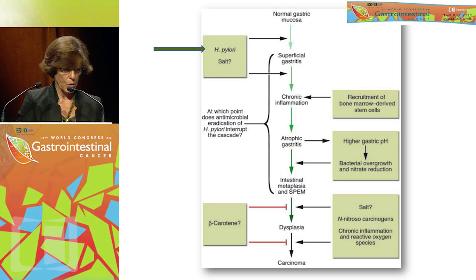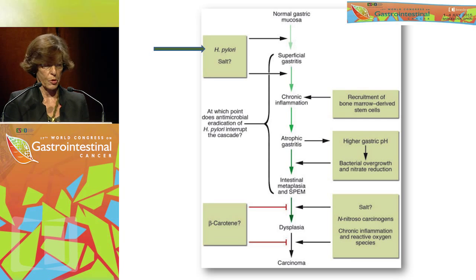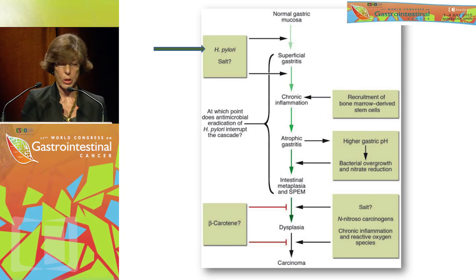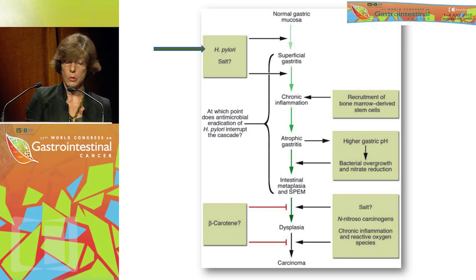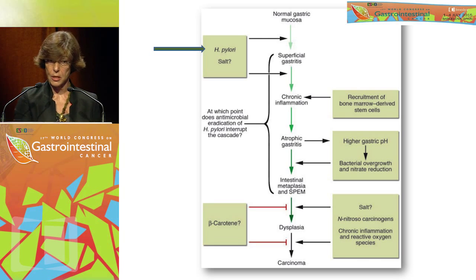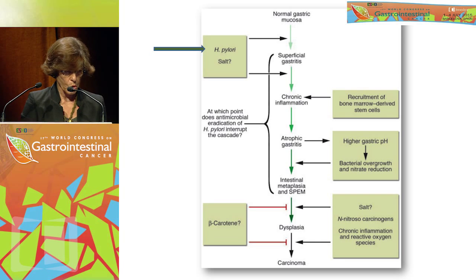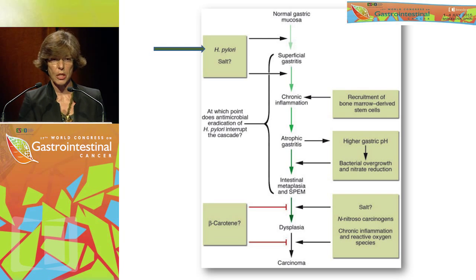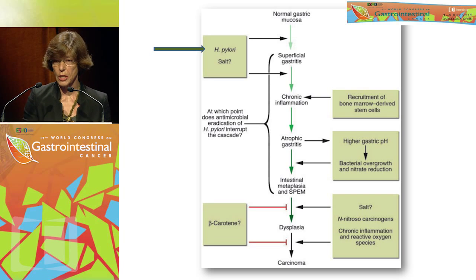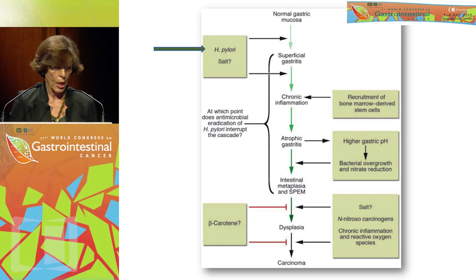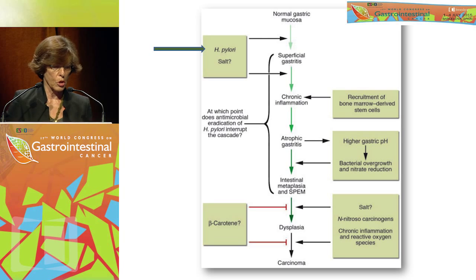What we have here is a cascade of events from normal gastric mucosa until gastric carcinoma, and this describes quite well what happens in the so-called intestinal type of gastric cancer, but not all types. I want to highlight the role of H. pylori, and also the role of bone marrow derived stem cells that can come to the stomach, differentiate into epithelial cells, and become the source of gastric cancer. I also want to highlight SPEM — spasmolytic polypeptide expressing metaplasia — a special type of metaplasia in the stomach.